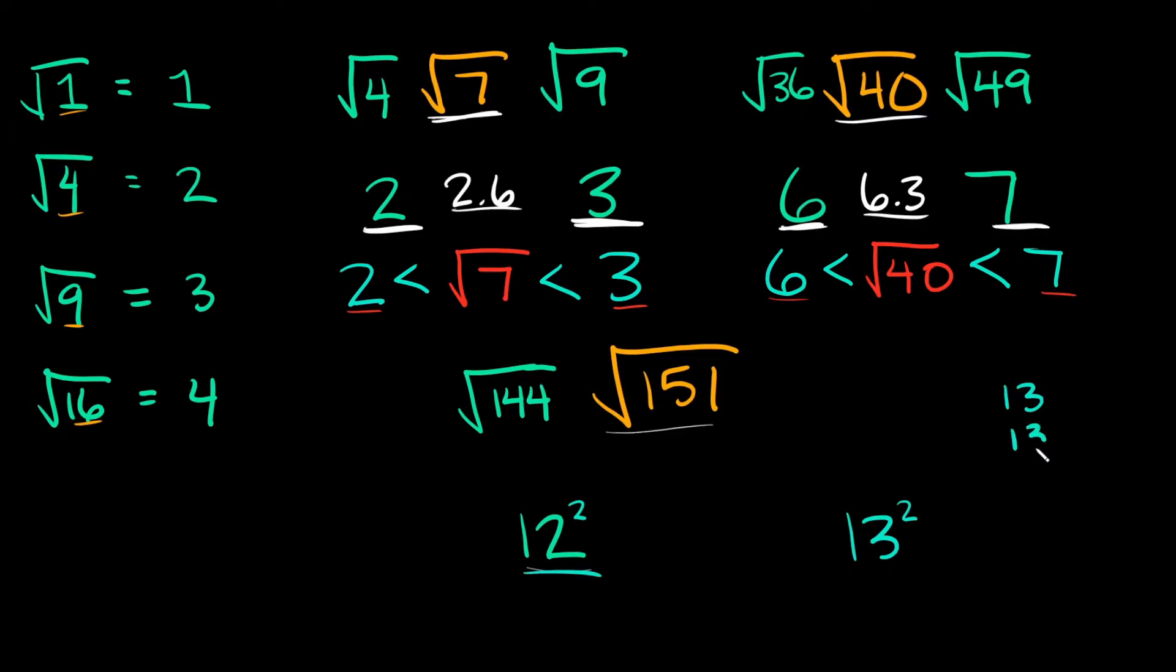Let's solve that off to the side. What's 13 times 13? 3 times 3 is 9, and 3 times 1 is 3. I'll put a 0 there. Then 1 times 3 is 3, and 1 times 1 is 1. Then I add them up: 9 plus 0 is 9, 3 plus 3 is 6, and then we have a 1. So 13 squared is equal to 169.